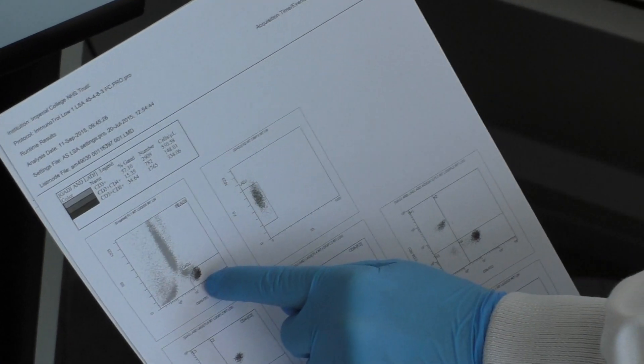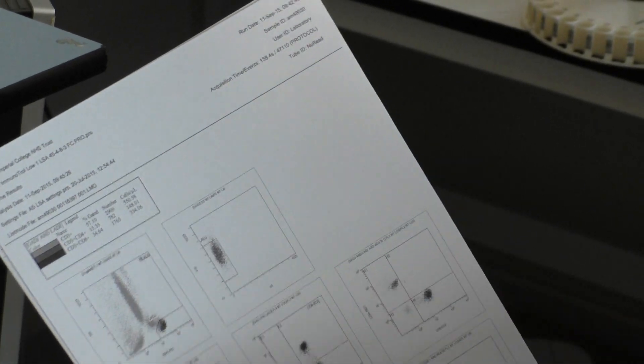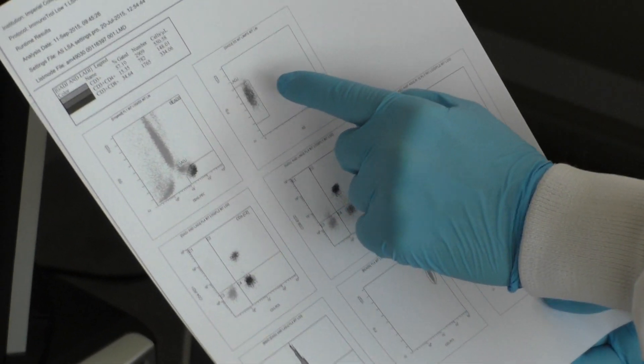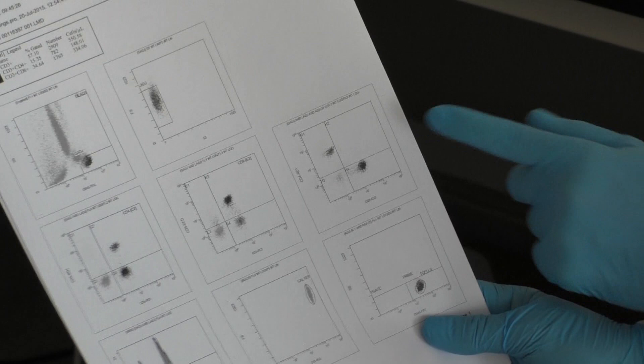It divides them into lymphocytes, monocytes, eosinophils, and everything else. Then it sorts them into just lymphocytes in this channel, then CD-4s, CD-8s, where we can actually see if there are some double positives or double negatives which can be relevant in a variety of conditions.